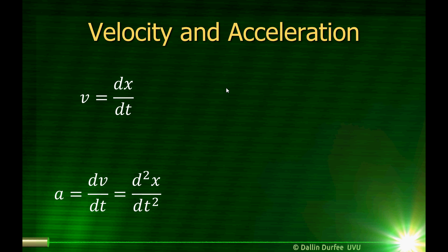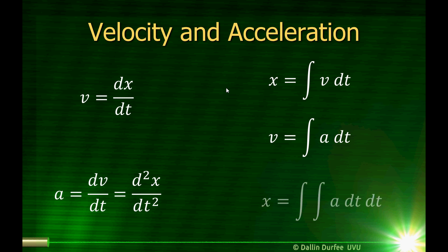Since velocity is the derivative of position with respect to time, I can do an integral and go backwards, and find the position from the velocity. So position is the integral of velocity with respect to time. Likewise, since acceleration is the derivative of velocity with respect to time, velocity is just the integral of acceleration with respect to time. And we can also find position by taking the second integral of acceleration with respect to time.